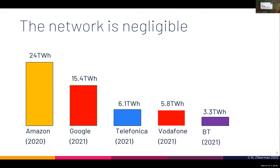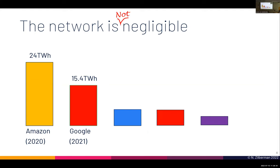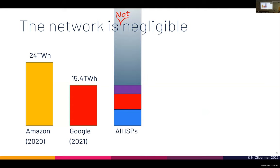Sometimes people tend to think that the network is negligible. If Amazon consumes about 24 terawatt hours per year and Google more than 15 terawatt hours per year, then ISPs such as Telefonica and Vodafone consume less than 6 terawatt hours. However, the network is not negligible because we have a lot more ISPs than hyperscalers, and these numbers become huge. Telefonica consumes about 54 megawatt hours per petabyte — and that's after they reduced their power consumption by 86 percent over the last six years. So we do have a real need here for carbon efficiency.